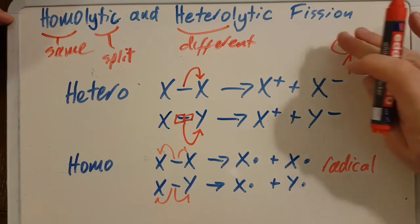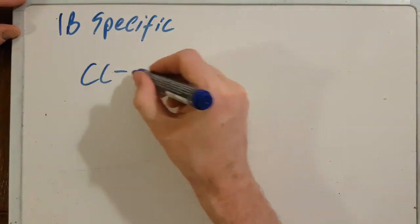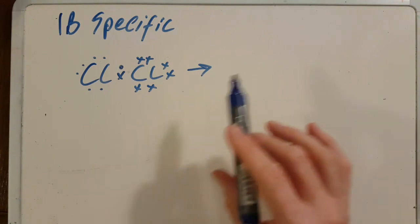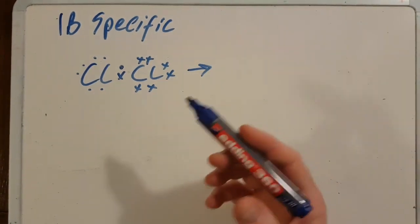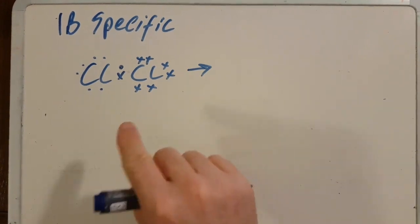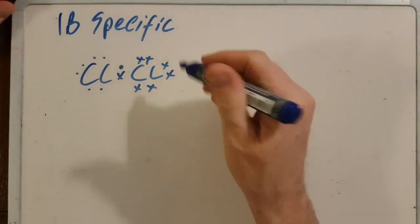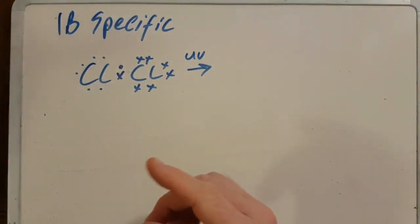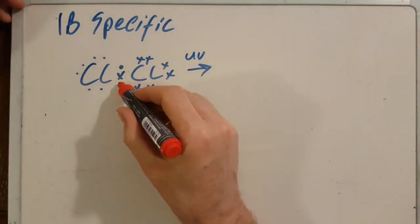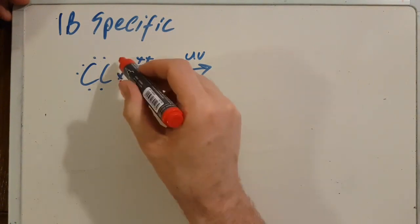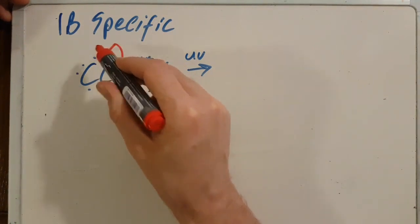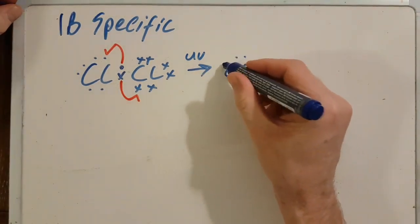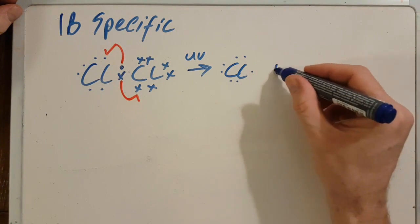So when you halogenate an alkane, you remember that's initiation, propagation, termination. The first step is where the chlorine is zapped with ultraviolet light and it splits in homolytic fission. This electron goes back to that chlorine and that electron goes back to that chlorine. Now I'll give it in a little more detail than the IB would normally want just to emphasize the point.